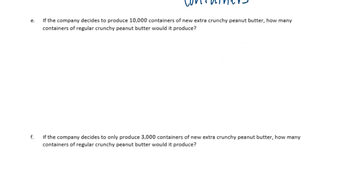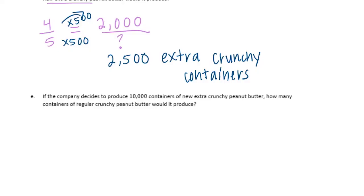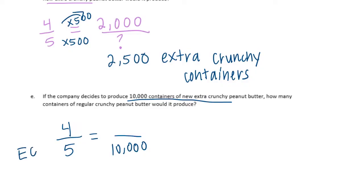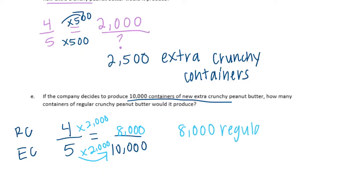Part E: if the company decides to produce 10,000 containers of new extra crunchy peanut butter, how many containers of regular crunchy would it produce? Using the ratio four to five — four is regular, five is extra crunchy — with 10,000 on the bottom for extra crunchy, we find five times 2,000 equals 10,000, so four times 2,000 equals 8,000 regular crunchy containers.